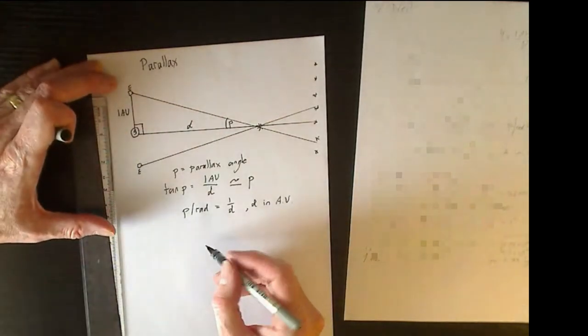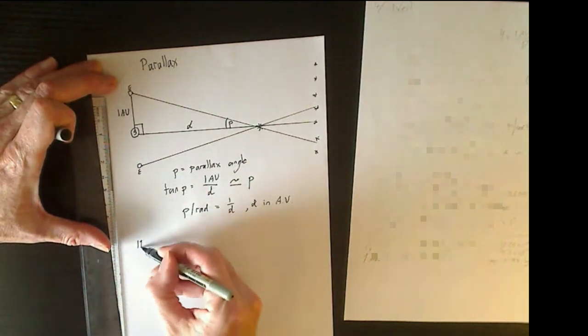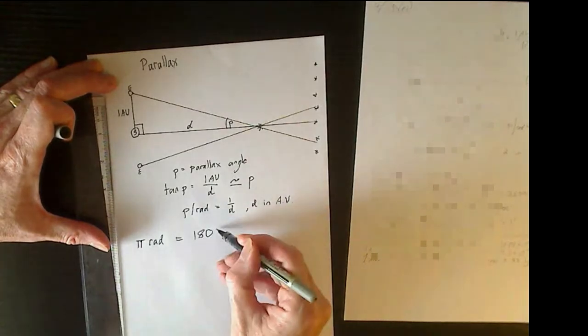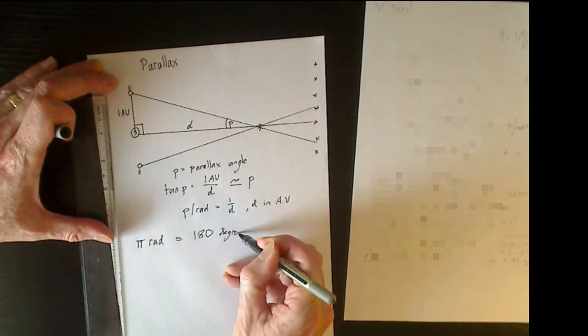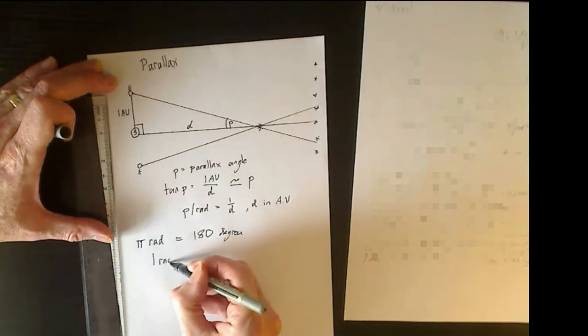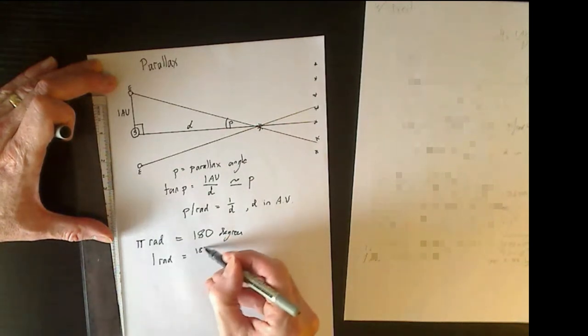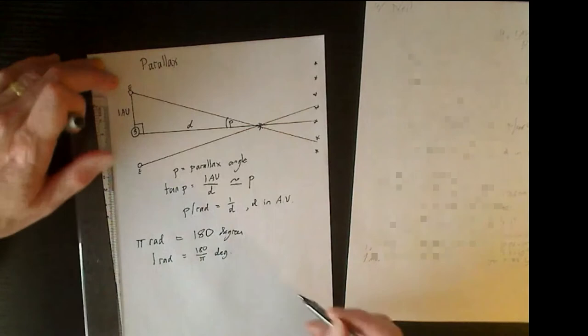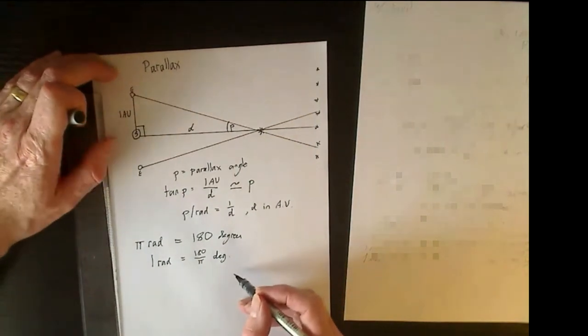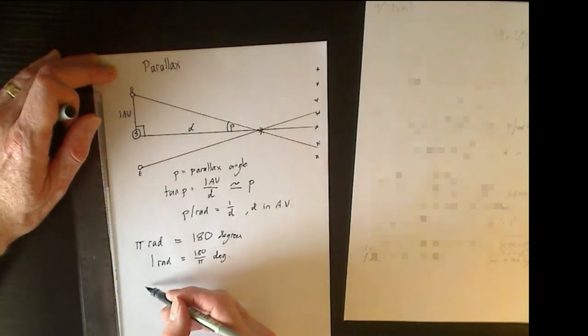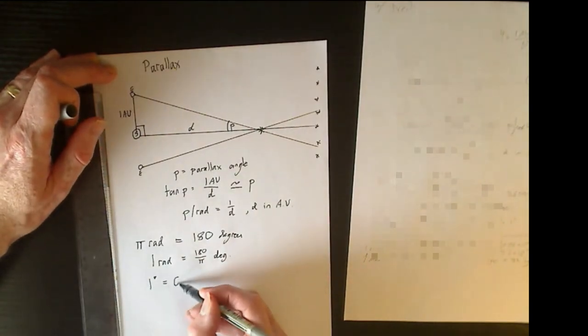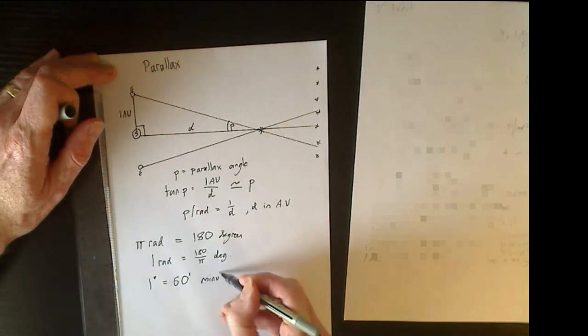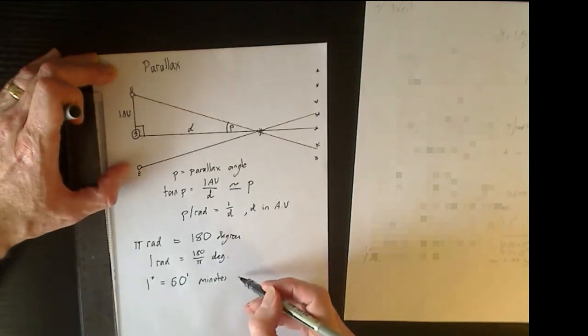So a little bit of review about radians. Pi radians is equivalent to 180 degrees, which means that one radian is 180 over pi degrees. Now astronomers use much smaller angles than one degree, and one degree is split into 60 minutes of arc, written with a single quote for short. So one minute of arc is already a very small angle.